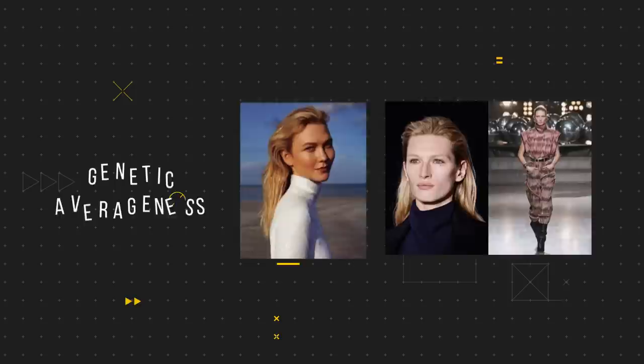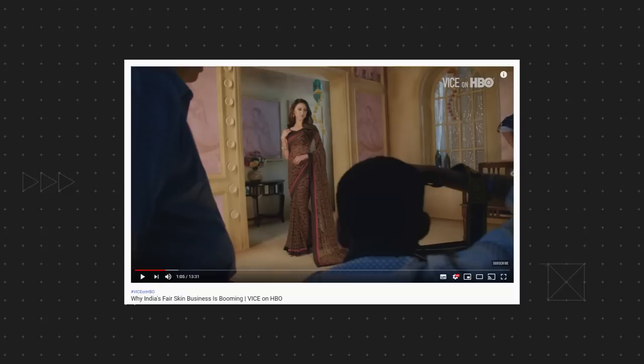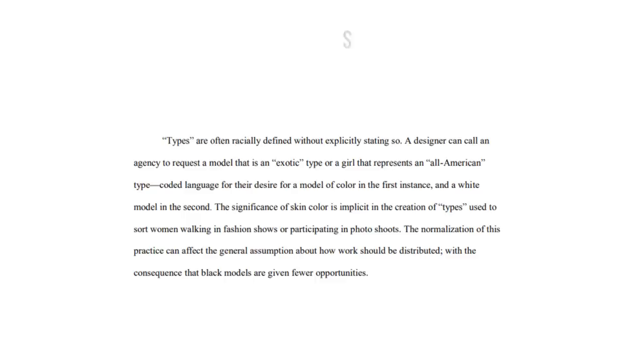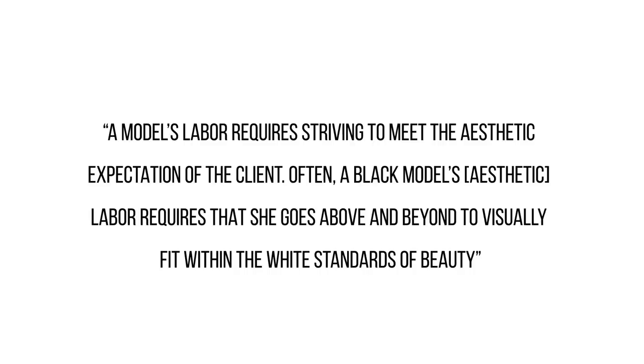There is a Vice documentary — I can't show it here because of copyright — that is essentially about how Indian designers use ethnically ambiguous Ukrainian models for their shoots instead of Indian ones. High fashion pushes the idea of 'types,' which avoids the baggage of racism by categorising a look by stereotypes, where certain colours don't fit the 'all-American girl' stereotype, even when that's no longer a proper representation of the actual American demographic. From 'Black Models Matter: Challenging the Racism of Aesthetics and the Facade of Inclusion in the Fashion Industry,' a model's labour requires striving to meet the aesthetic expectations of the client, and often a black model's aesthetic labour requires that she goes above and beyond to visually fit within the white standards of beauty.